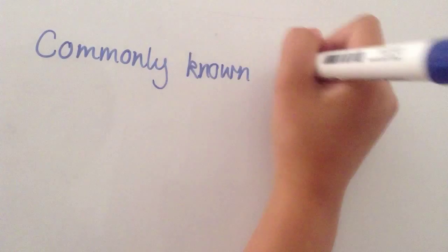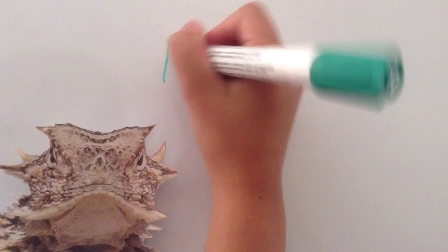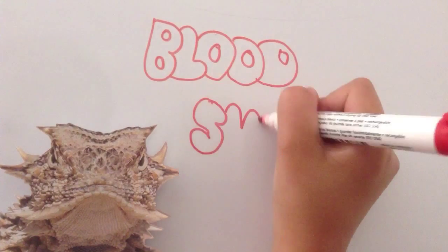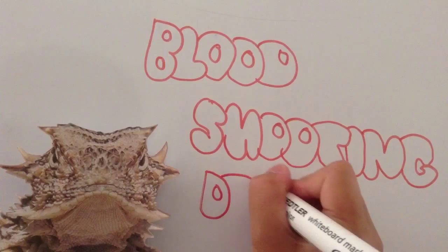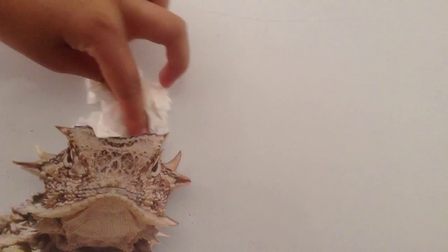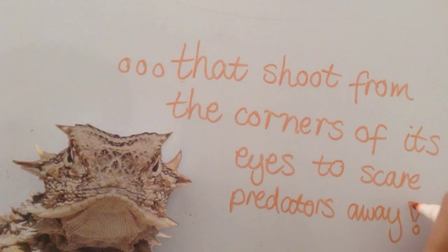This lizard is commonly known for its weird but most amazing adaptation. It has a blood shooting defense that shoots from the corners of its eyes to scare predators away.